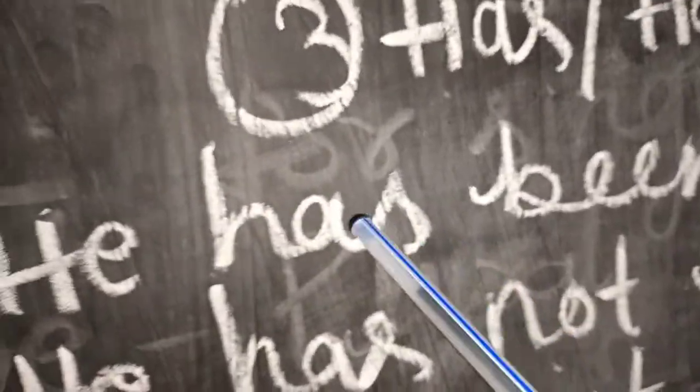He has been waiting for you since 5 o'clock. He has not been, this is negative sentence. He has not been waiting for you since 5 o'clock.